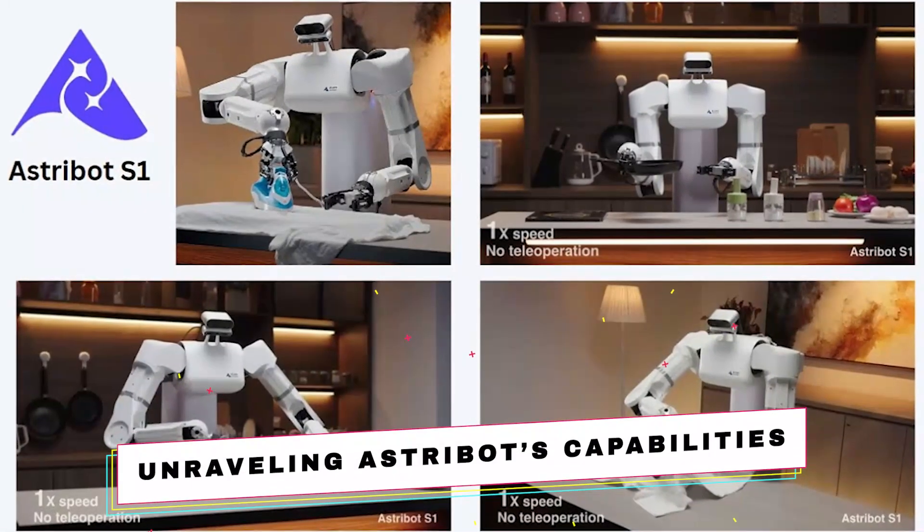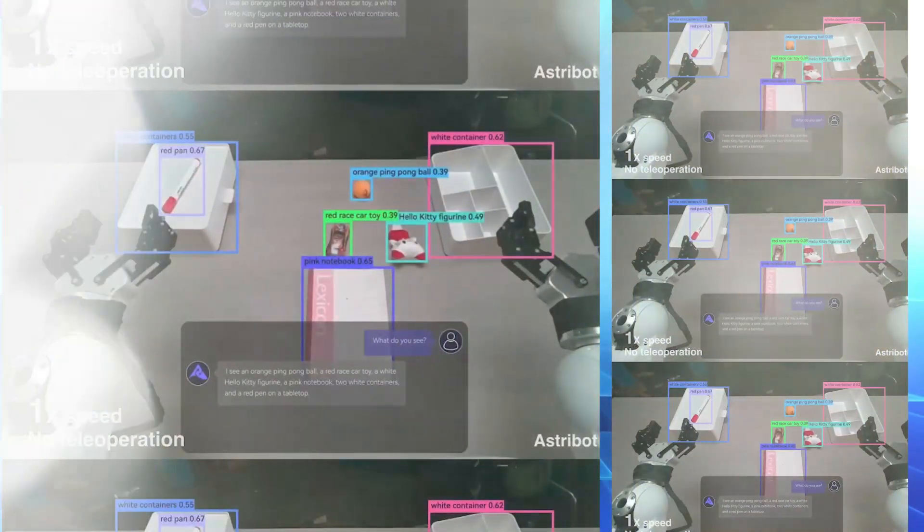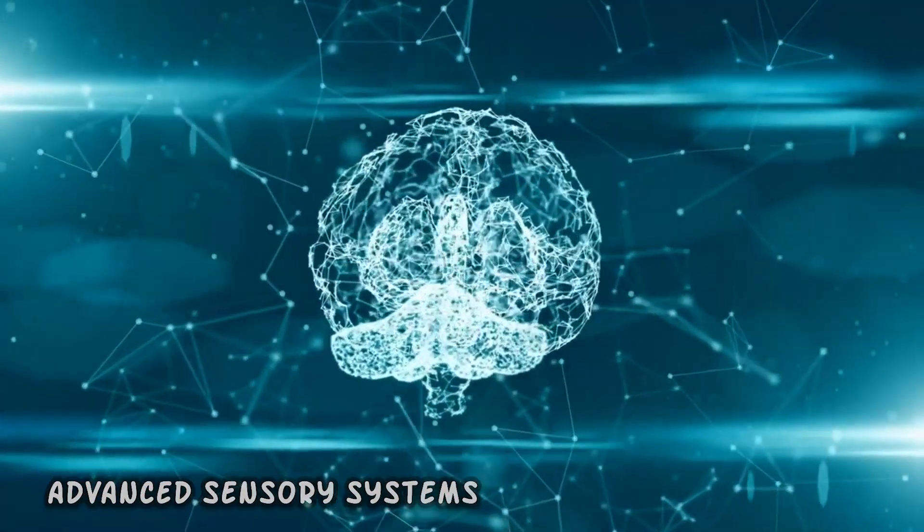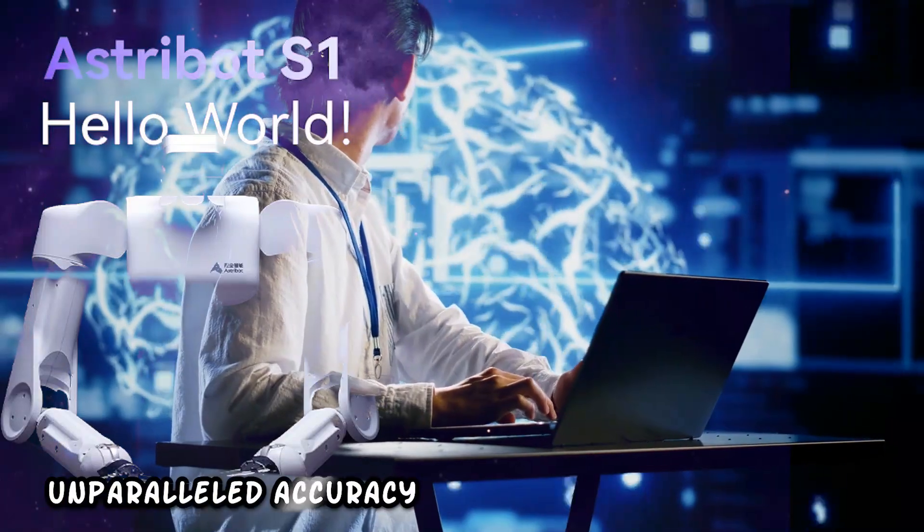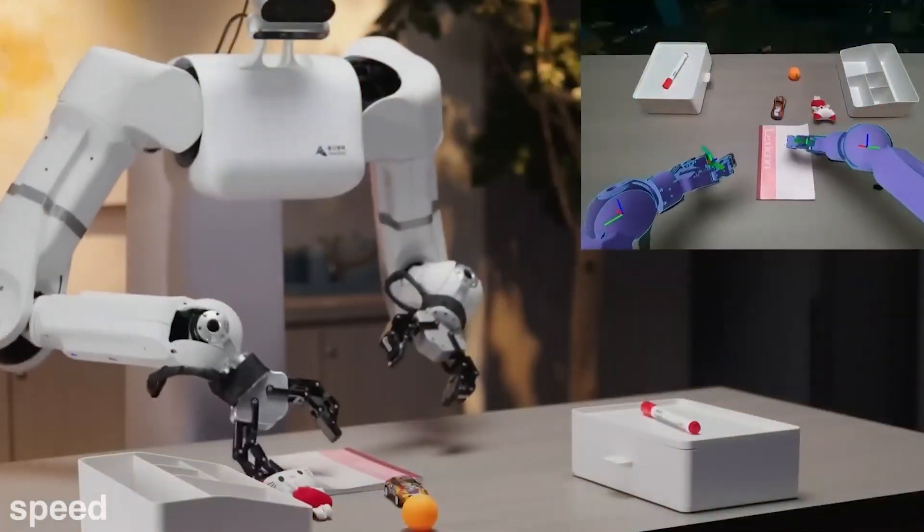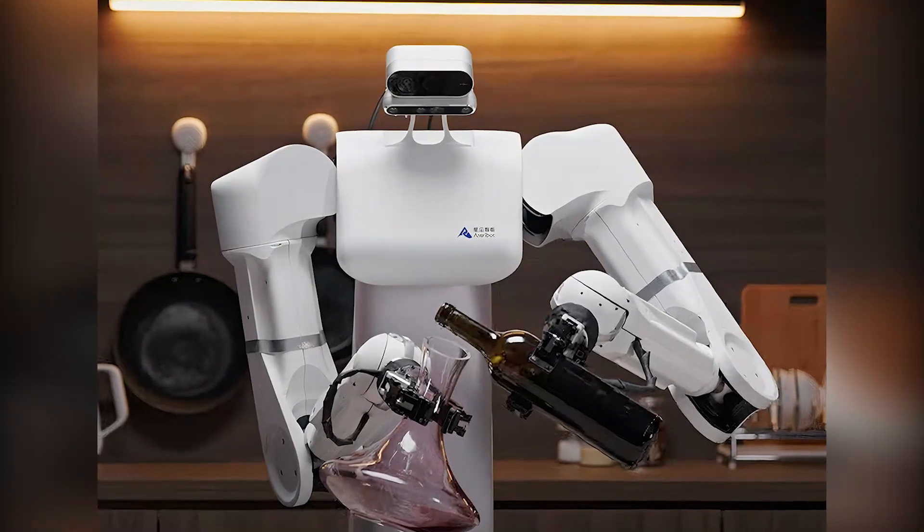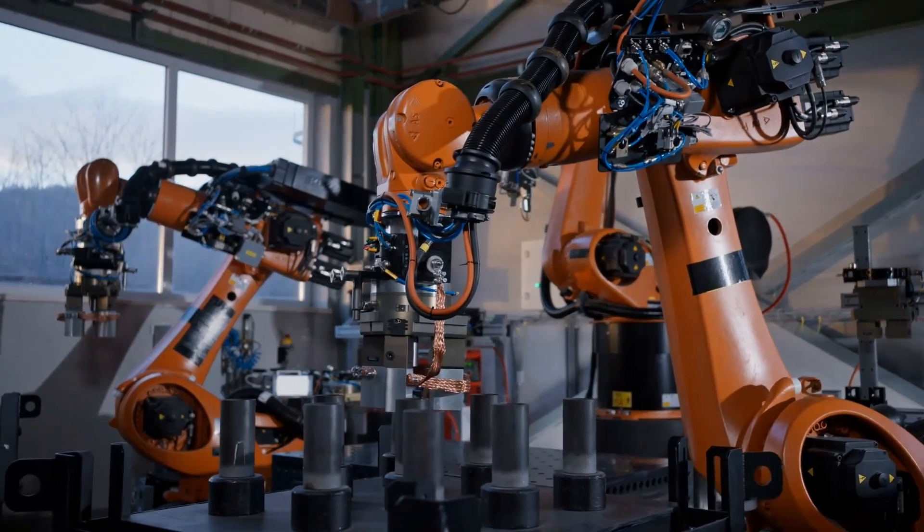Unraveling Astrobot's capabilities. Astrobot S1's capabilities are a testament to cutting-edge technology, combining advanced sensory systems and neural networks to navigate its surroundings with unparalleled accuracy. Whether it's executing intricate manufacturing tasks or performing delicate surgeries in healthcare settings, Astrobot's adaptability is seamless, heralding a transformative wave across global industries.